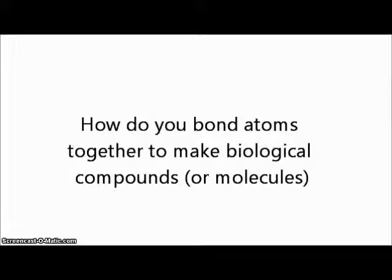So how do you bond atoms together to make biological molecules or compounds? Now remember that we are working with hydrogen, oxygen, nitrogen, or carbon. So there's something called the HONC rule. The reason I say HONC is that means hydrogen can have one bond, oxygen can have two bonds, nitrogen can have three bonds, and carbon can have four bonds.